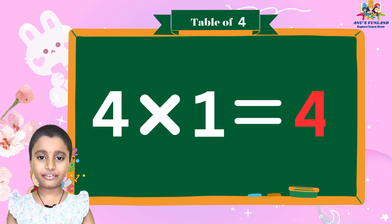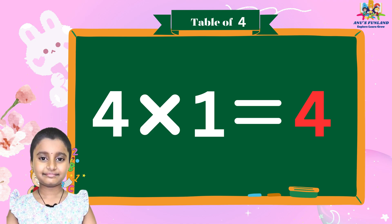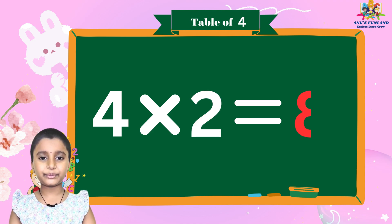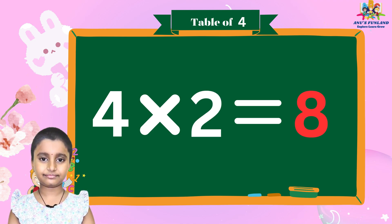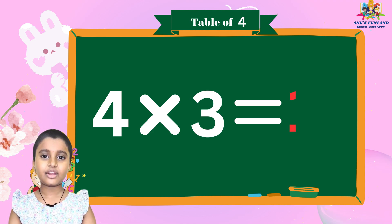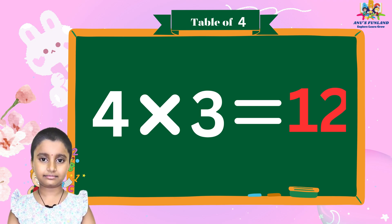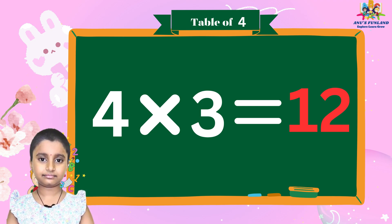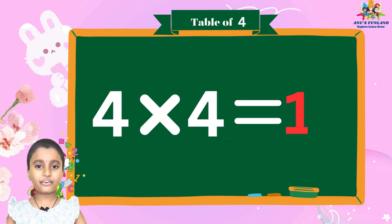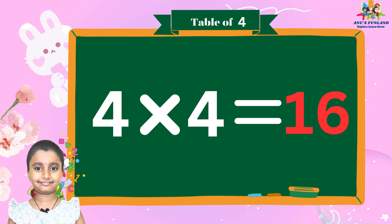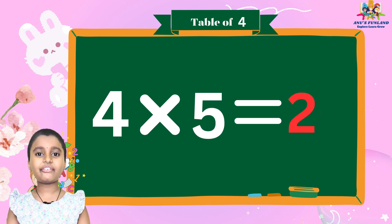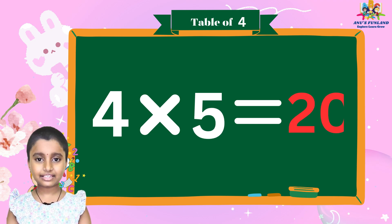Four ones are four, four twos are eight, four threes are twelve, four fours are sixteen, four fives are twenty.